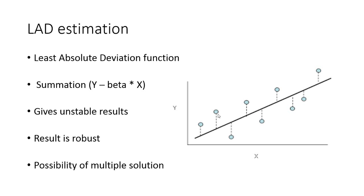The change we make in least absolute deviation estimation is that we do not take the square — we do not square the difference. We simply take the absolute value or the modulus of the difference, sum it, and minimize that function. So a least absolute deviation function is the summation of the modulus of y minus beta multiplied to x.